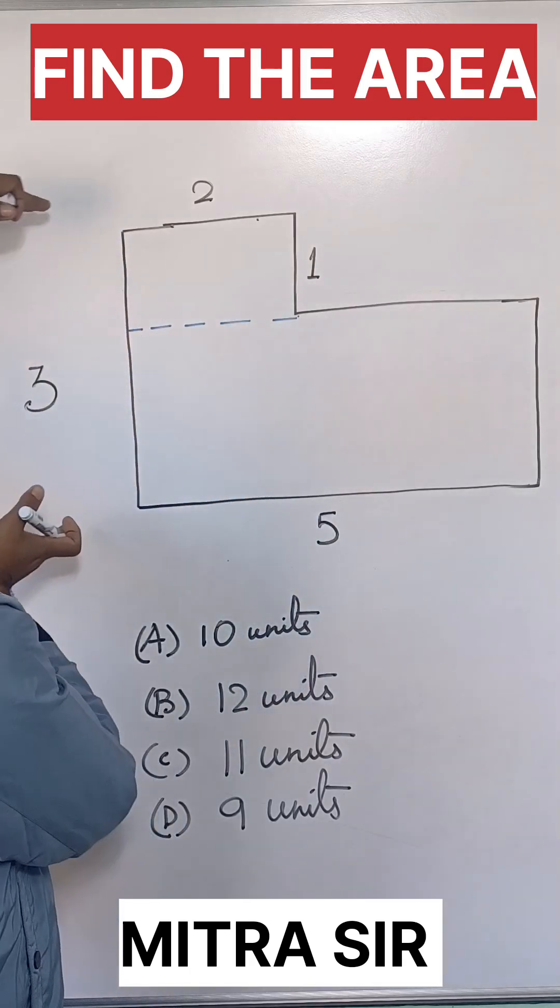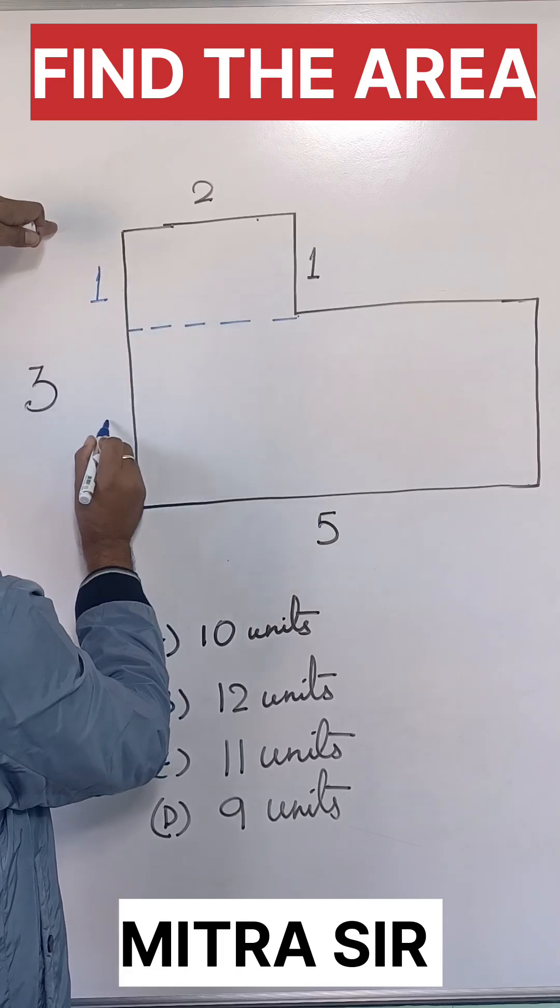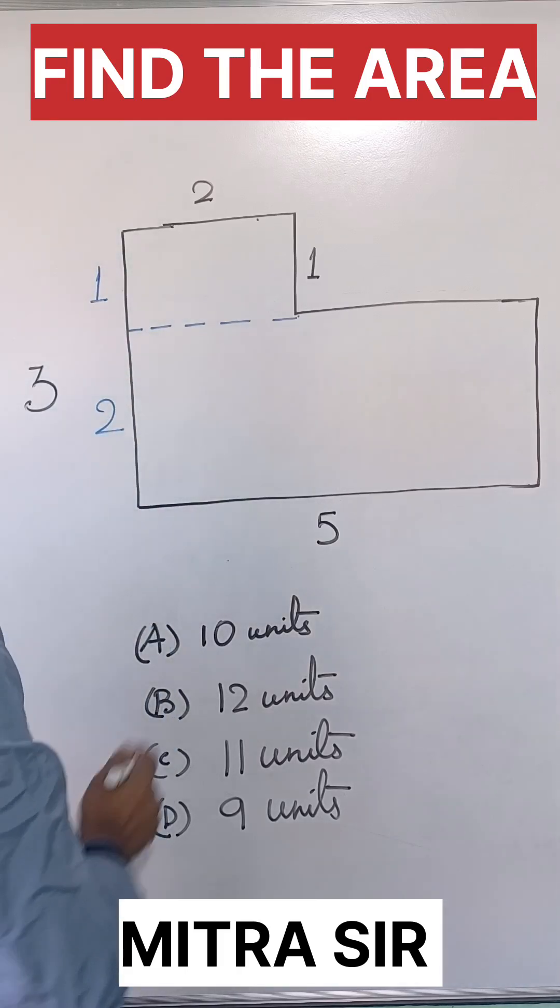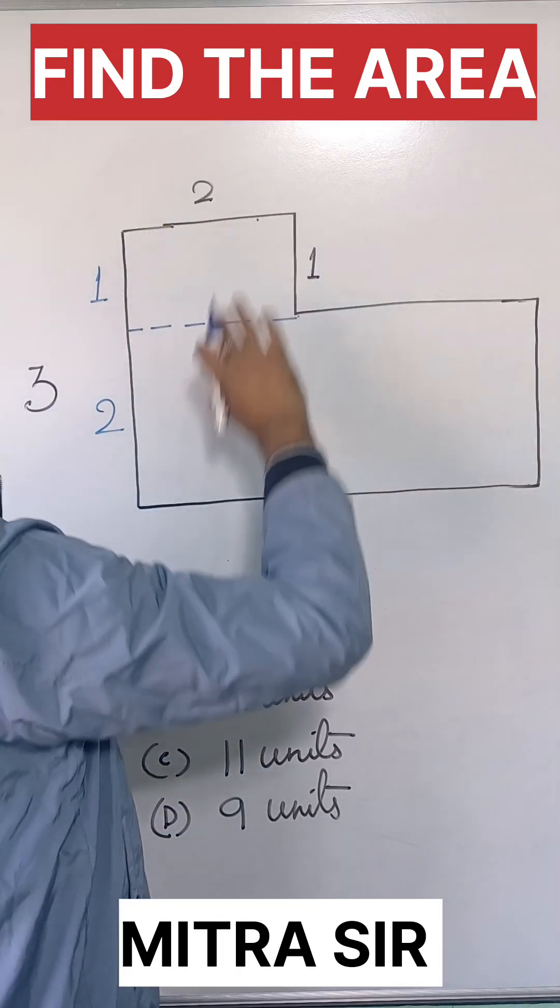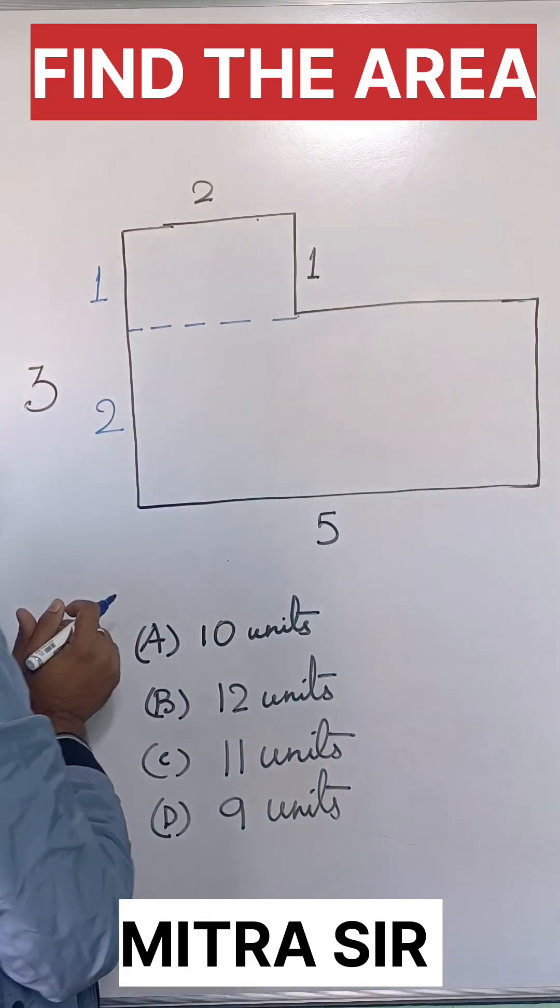This length is 3, so it should be 1 and this should be 2. So this is a small rectangle. Now the picture is very clear - this is a bigger rectangle. There are 2 rectangles.